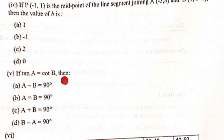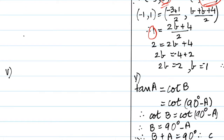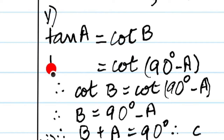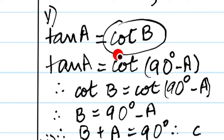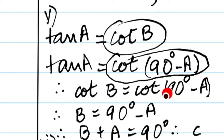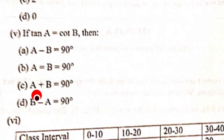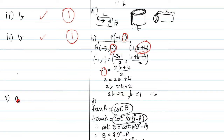Fifth question: If tan A equals cot B, which of these is true? We know tan A = cot(90° - A). So cot B = cot(90° - A), which gives B = 90° - A. Bringing A to the other side gives A + B = 90 degrees. The answer is option C.